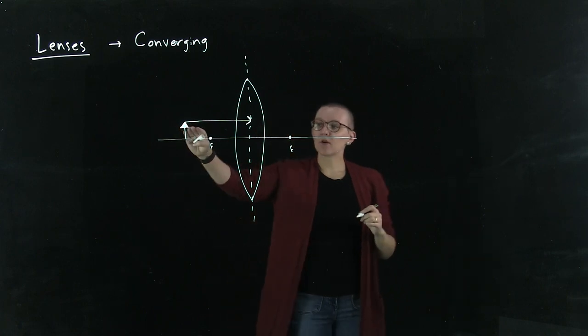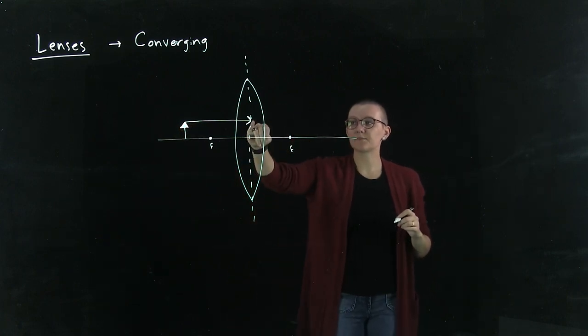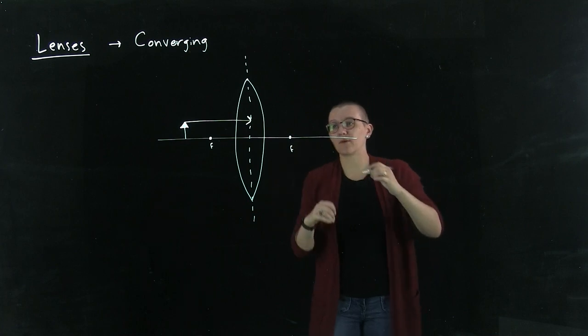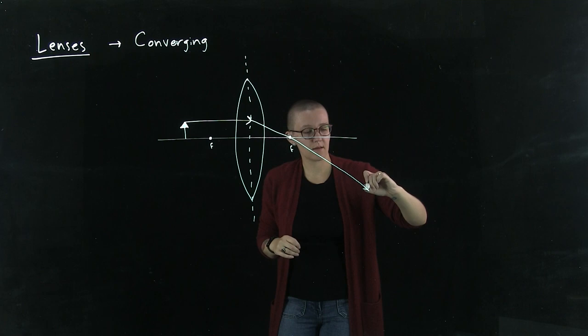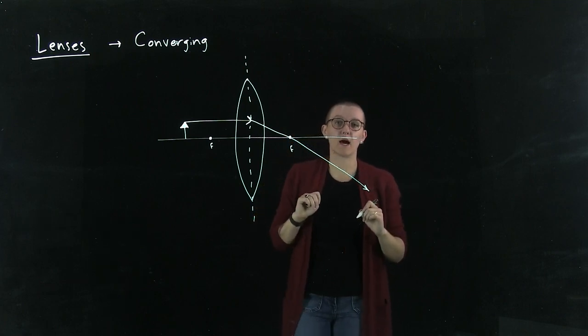It will come in and hit that optical plane of the lens. Any parallel rays, parallel to the optical axis, will be bent towards the focal point. So we can draw a ray through the focal point on the opposite side.